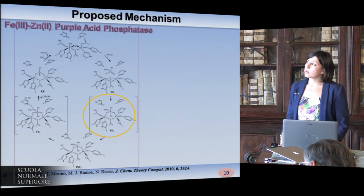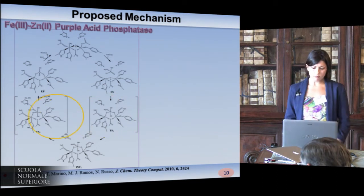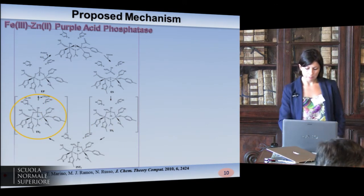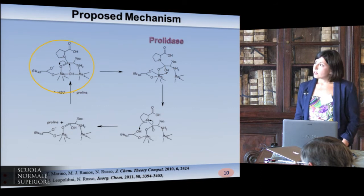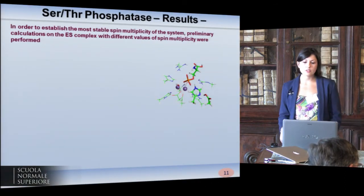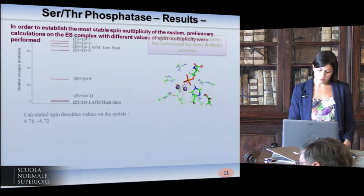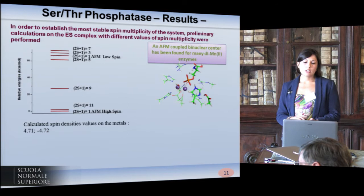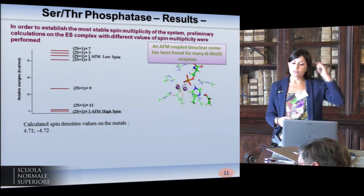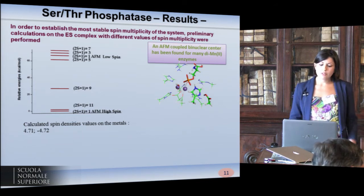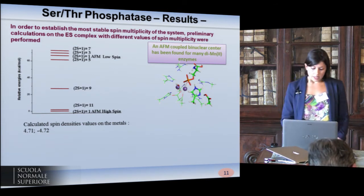Something similar was found in our previous work on purple acid phosphatase, where we found a transition state for the nucleophilic attack and a second transition state for the release of the leaving group. Also in the case of prolidase, we found a transition state for the nucleophilic attack and another for the protonation of the leaving group. In the case of serine-threonine phosphatase, the first step was to determine the most stable spin multiplicity of the system, taking into account the antiferromagnetic coupling found in many dimanganese enzymes.